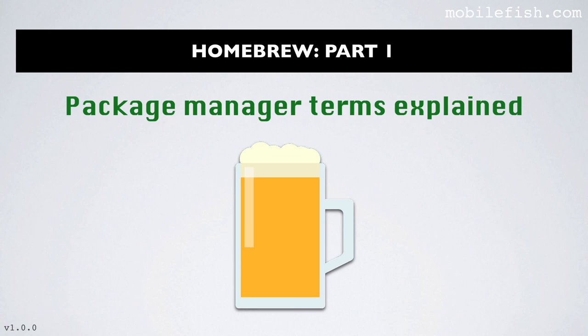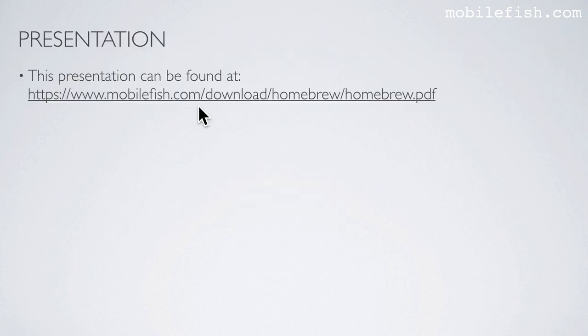In this tutorial I will explain often used Homebrew Package Manager terms such as formula, bottle, cellar, keg, cask, and tap. This presentation can be found at this location.